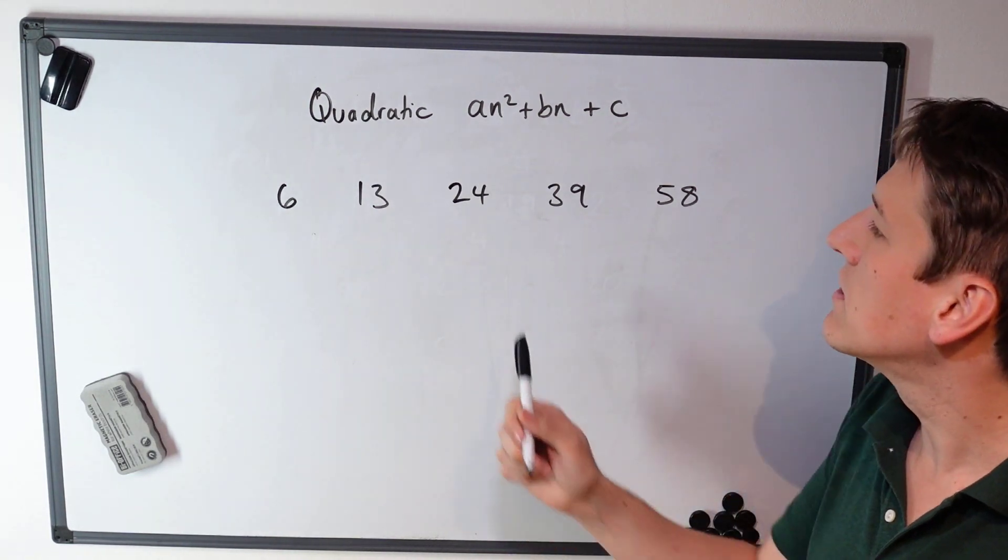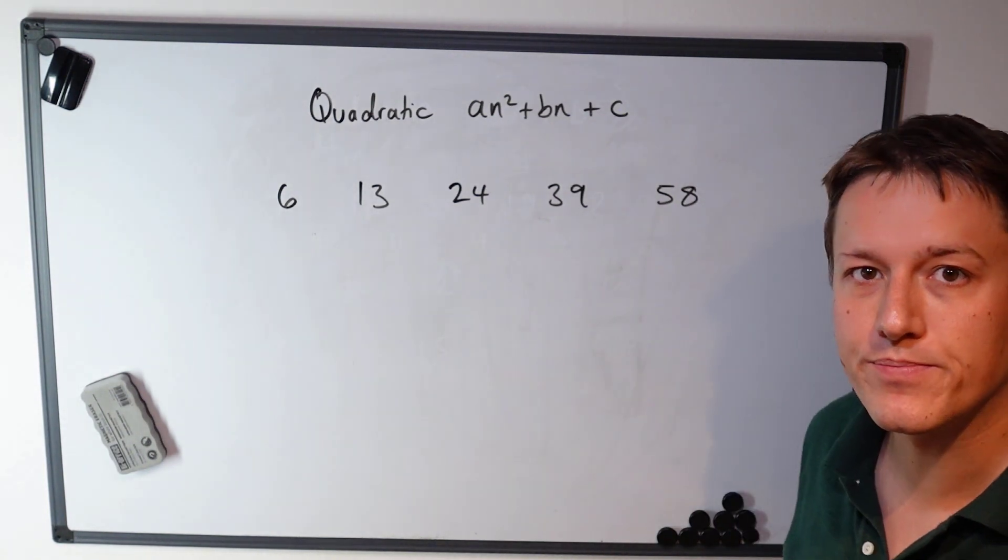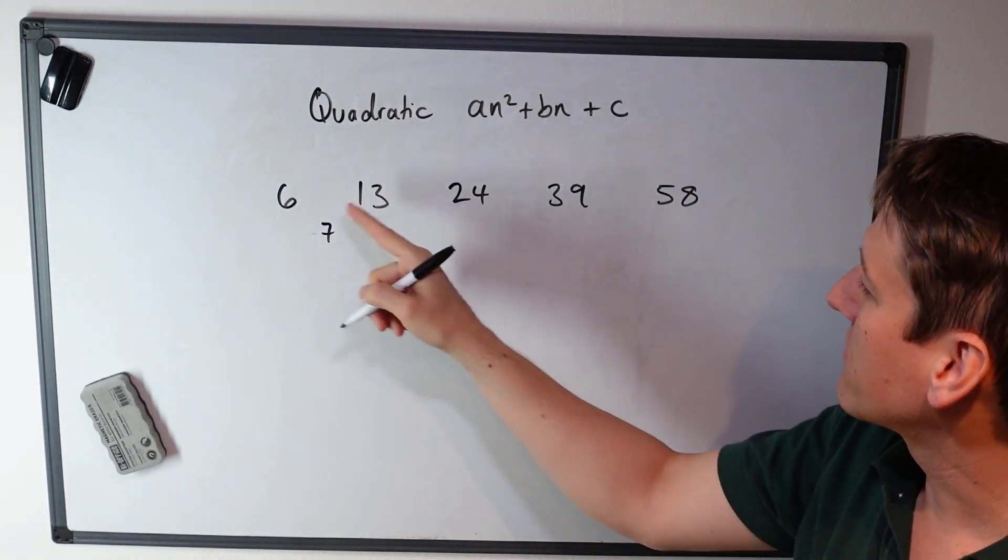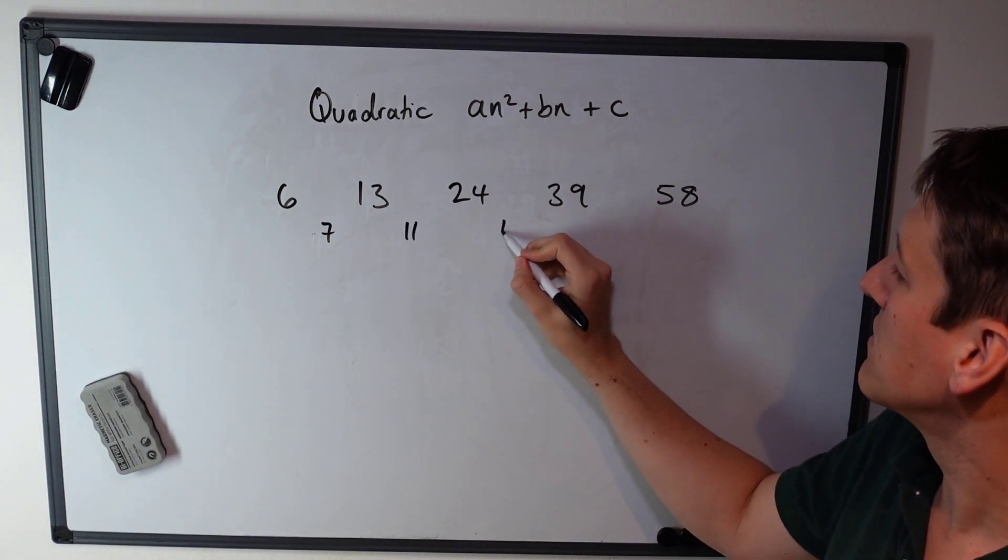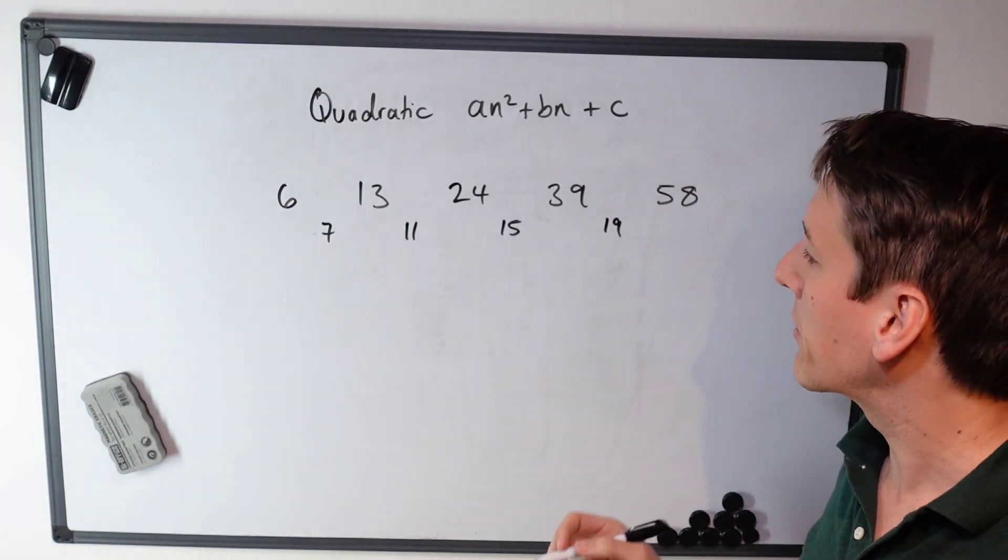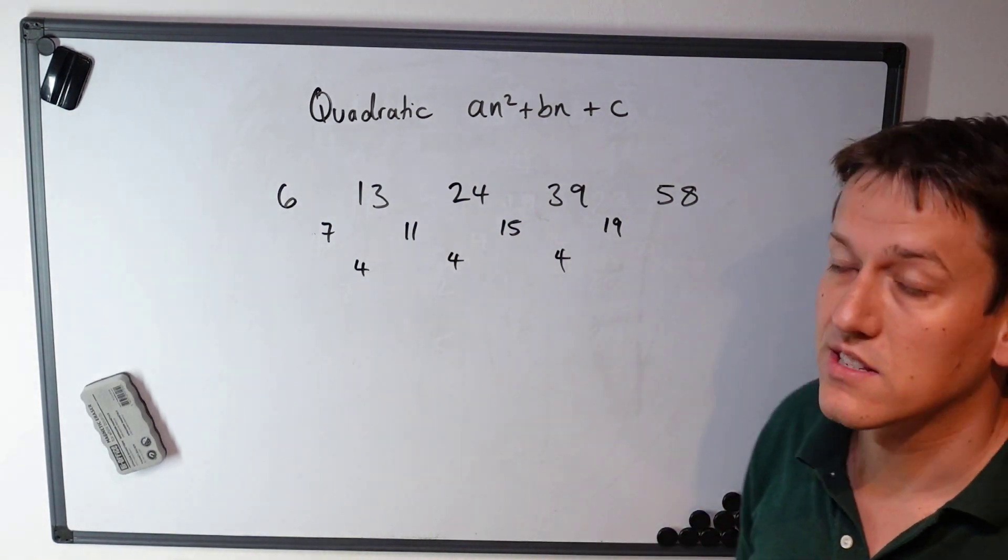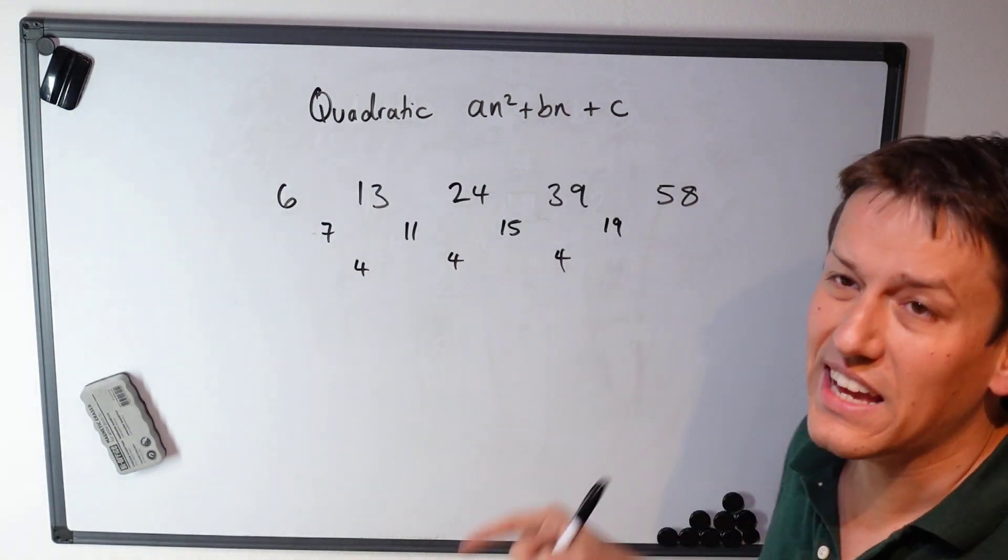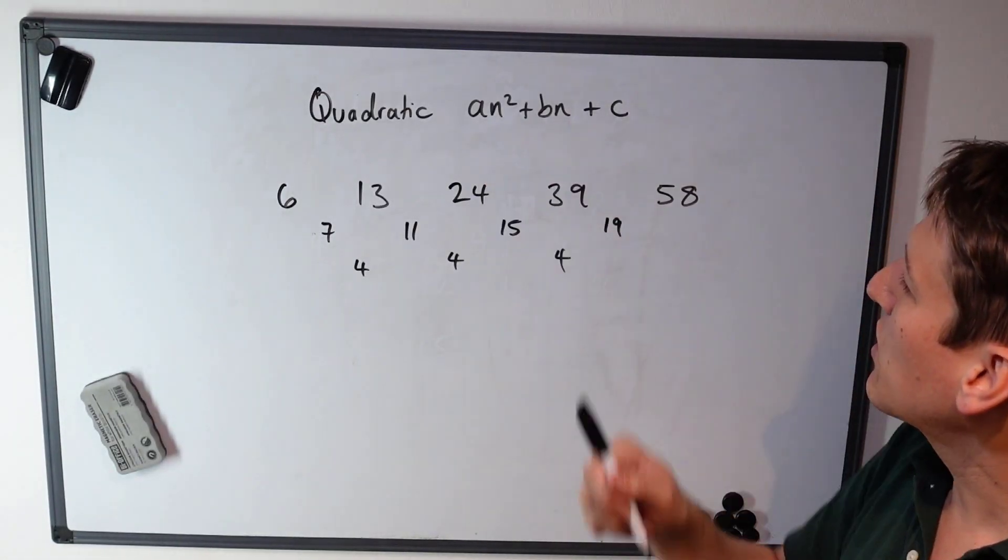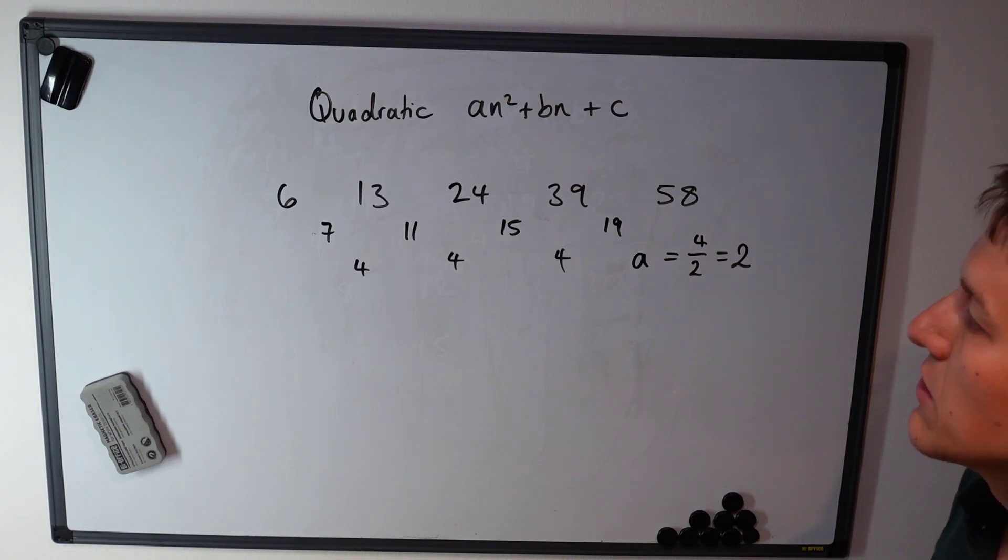So now suppose we have a quadratic sequence. This time it's going to be of the form an² plus bn plus c, where a, b, and c are coefficients that we're trying to work out. We start in the same way and look for the first differences: 13 minus 6 is 7, 24 minus 13 is 11, 39 minus 24 is 15, and 58 minus 39 is 19. This time we see that there isn't a constant appearing. So we take the difference of the differences: 11 minus 7 is 4, 15 minus 11 is 4, 19 minus 15 is 4. When you get the second differences constant, this means that the sequence is a quadratic sequence. For a quadratic sequence, the coefficient a is half of the number that we get here. So the a that we're looking for is going to be 4 divided by 2, which is equal to 2.